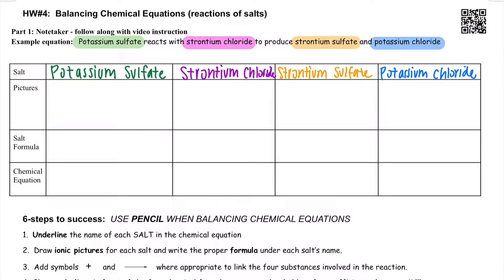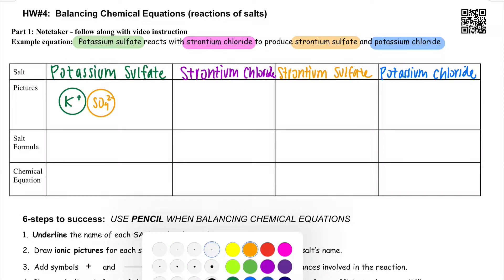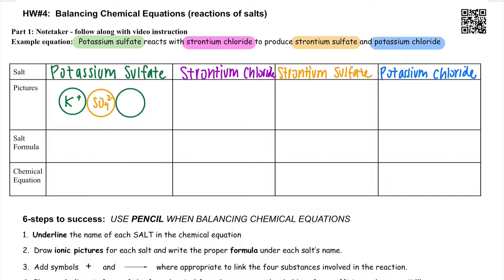Next step is to draw the bubble pictures, the ionic pictures, for each of the salts. So let's go through that together. Start with potassium. If you look on your periodic table, potassium has a plus one charge and sulfate has a two minus charge. In order to make this salt formula net charge equals zero, we will need two potassiums for every one sulfate.